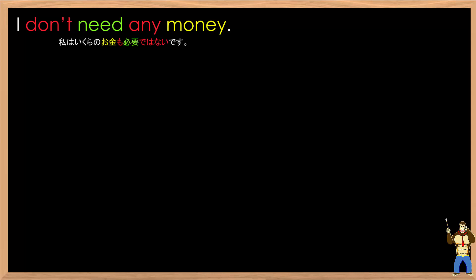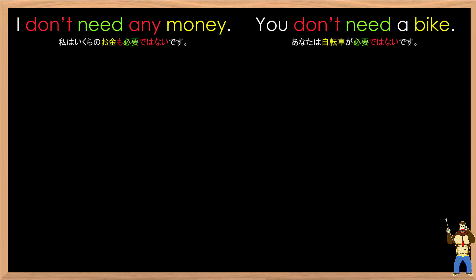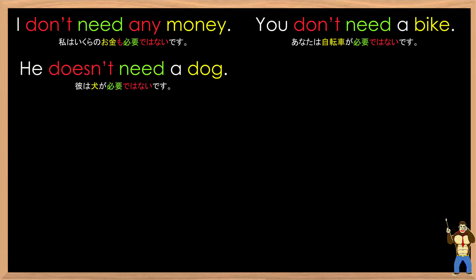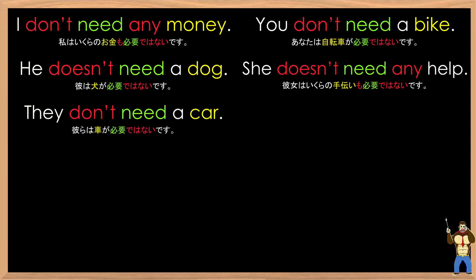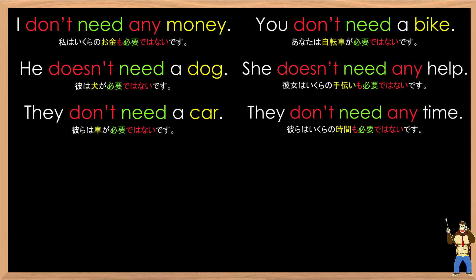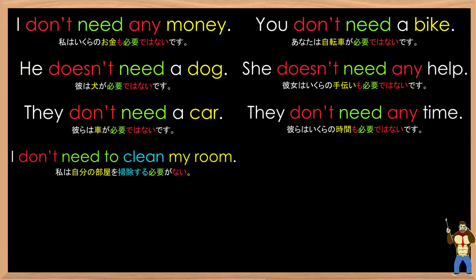Let's practice with some more sentences: I don't need any money. You don't need a bike. He doesn't need a dog. She doesn't need any help. They don't need a car. They don't need any time. I don't need to clean my room.